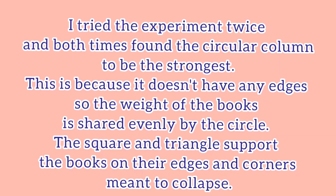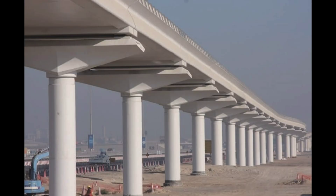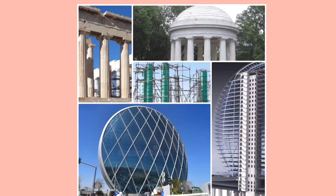You understood? That's why we see circular columns in dams, buildings, and bridges. This is the easy way to understand the capacity of shapes.